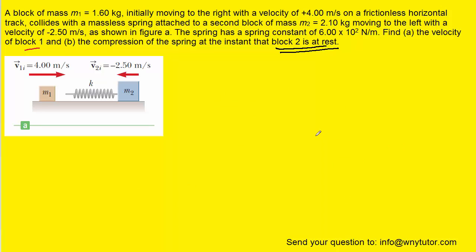Now to solve part B, which is asking us for the compression of the spring, we can actually use the conservation of energy rather than the conservation of momentum. So let's take a look at that principle. So according to the conservation of energy principle, the total initial energy will equal the total final energy. And we'll go ahead and expand these energy terms to include the specific types that are found in this problem.